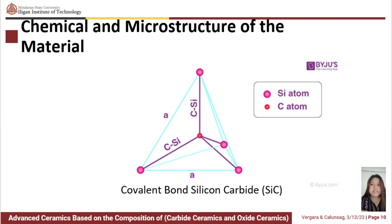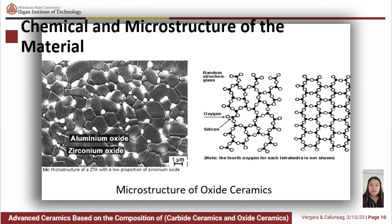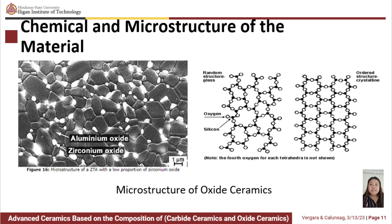Covalently bound silicon carbide is a hard substance — a silicon atom and 4 carbon atoms which are covalently bound between the two of them, making up the compound of silicon carbide, a non-oxide ceramic engineering material that has attracted a lot of interest.